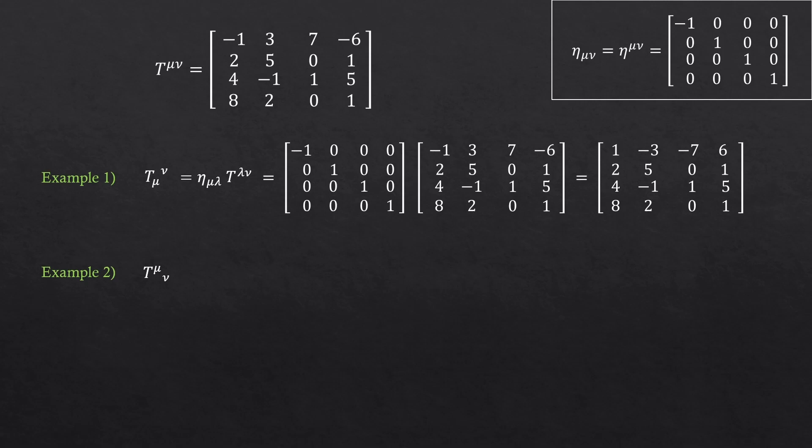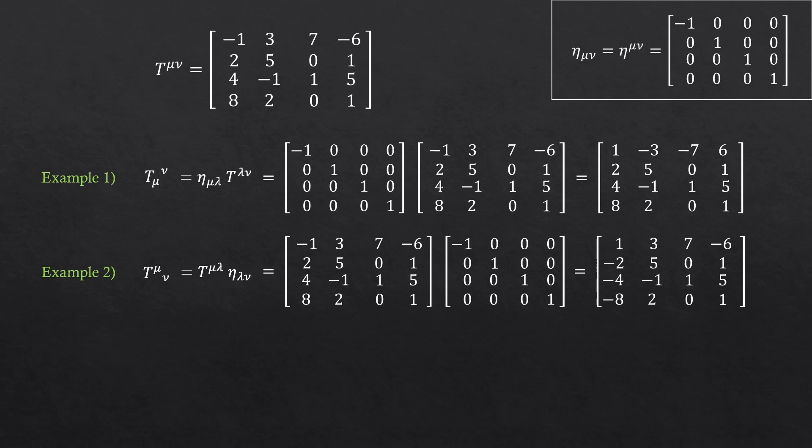Now how about this one? We are now lowering the second one. Because the second index is on the right side, we should put the metric on the right side of the tensor as well. Does it make sense? So the order is now opposite. And it does matter in matrix multiplication. So we'll get a different answer. This is an important thing to know.